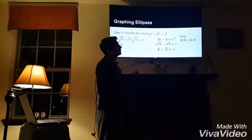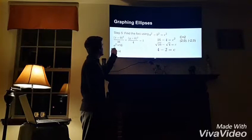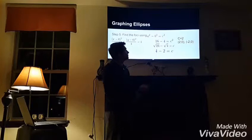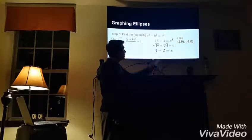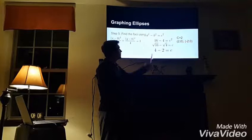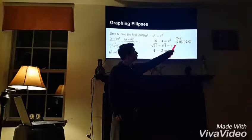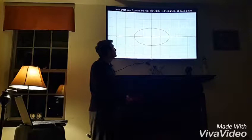Now, finally, you are going to find the foci using a squared minus b squared equals c squared. a squared equals 16 and b squared equals 4 from the earlier equation. If you plug it in, you get 16 minus 4 equals c squared. You then square root both sides, which gives you the square root of 12 equals c, so c equals 2 approximately. Your two foci on either side are (2, 0) and (-2, 0).